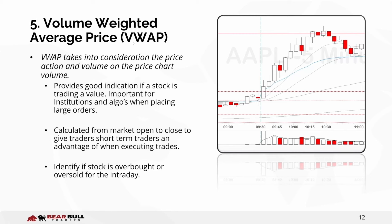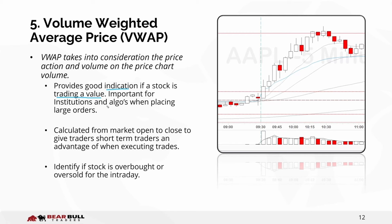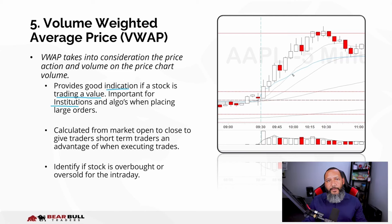Last but not least, probably one of my favorite indicators: the Volume Weighted Average Price, called the VWAP. It identifies where there's good volume and price action and provides an indication of whether a stock is trading at value — whether it's overbought or oversold — which is important for decision-making. Institutions love to watch this indicator because when buying large orders, say a million shares of Apple, they won't send it all at once — they let price come back down to the VWAP, buy more, let it go back up, come back down, and buy more so their average price stays at value.